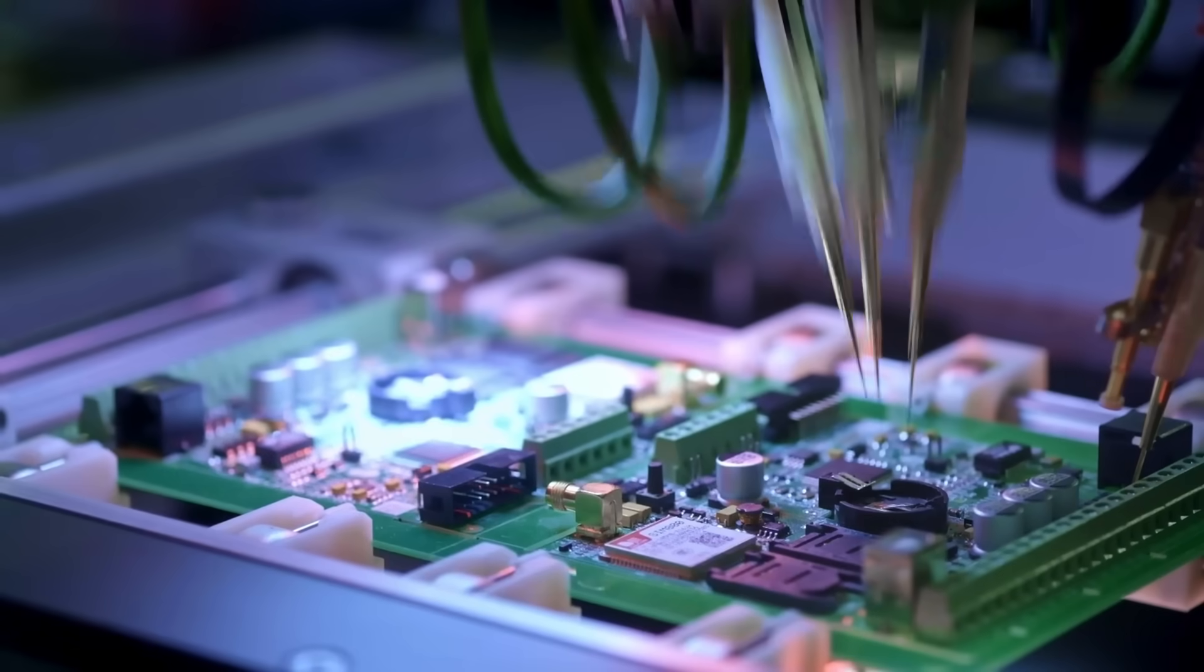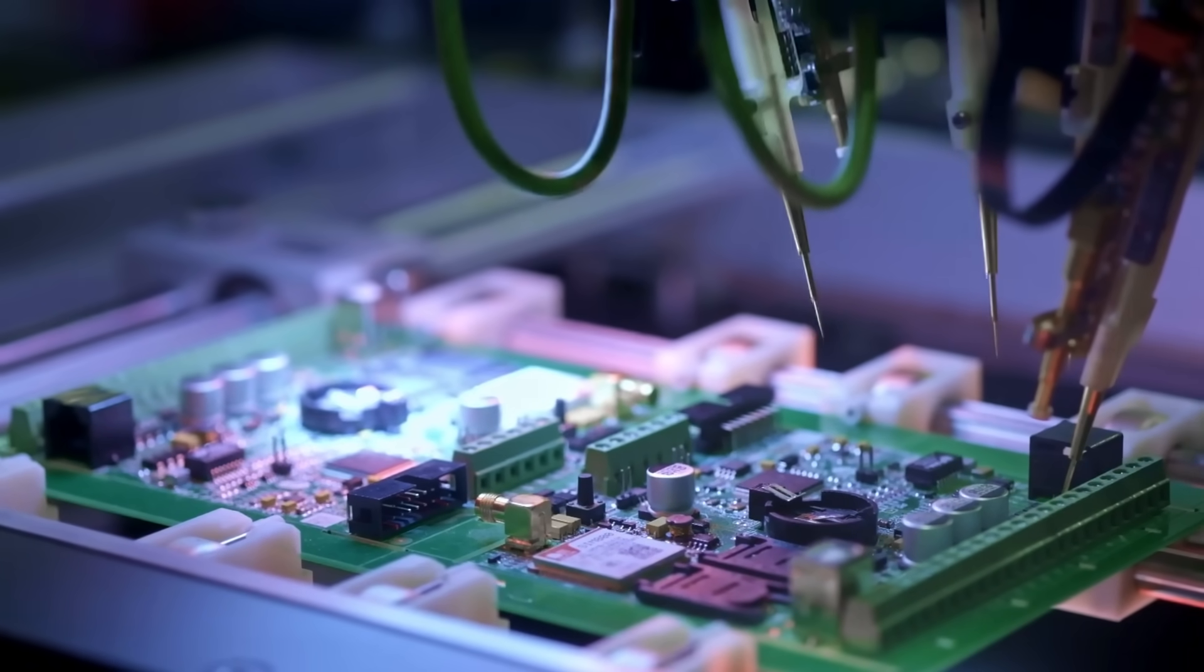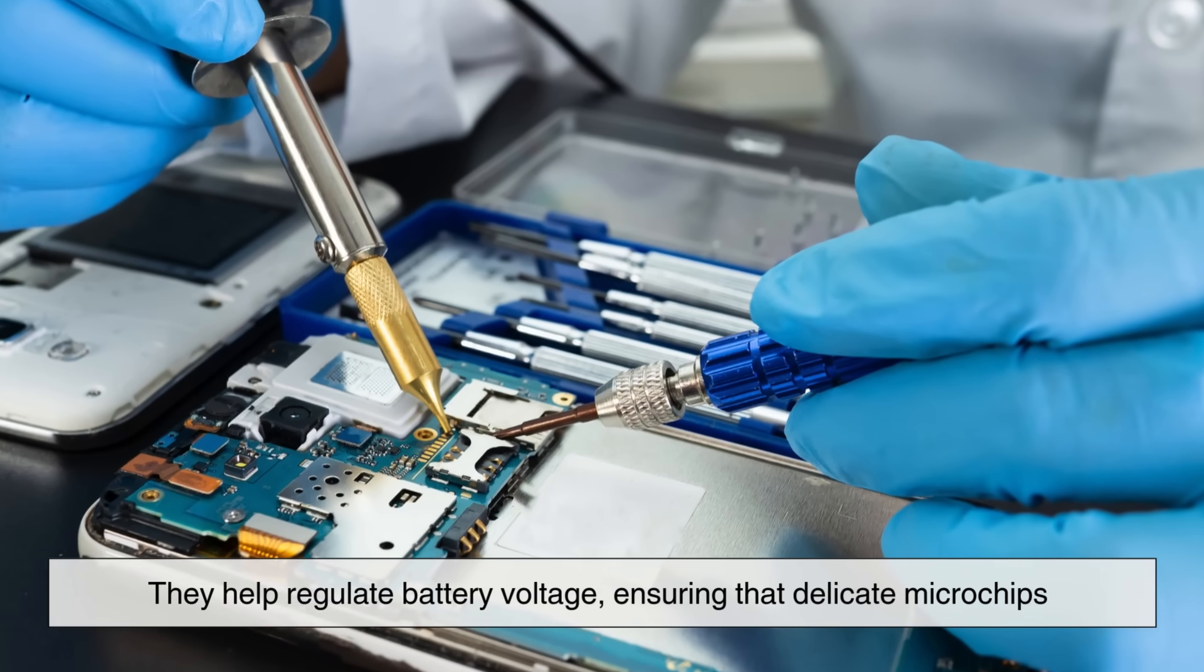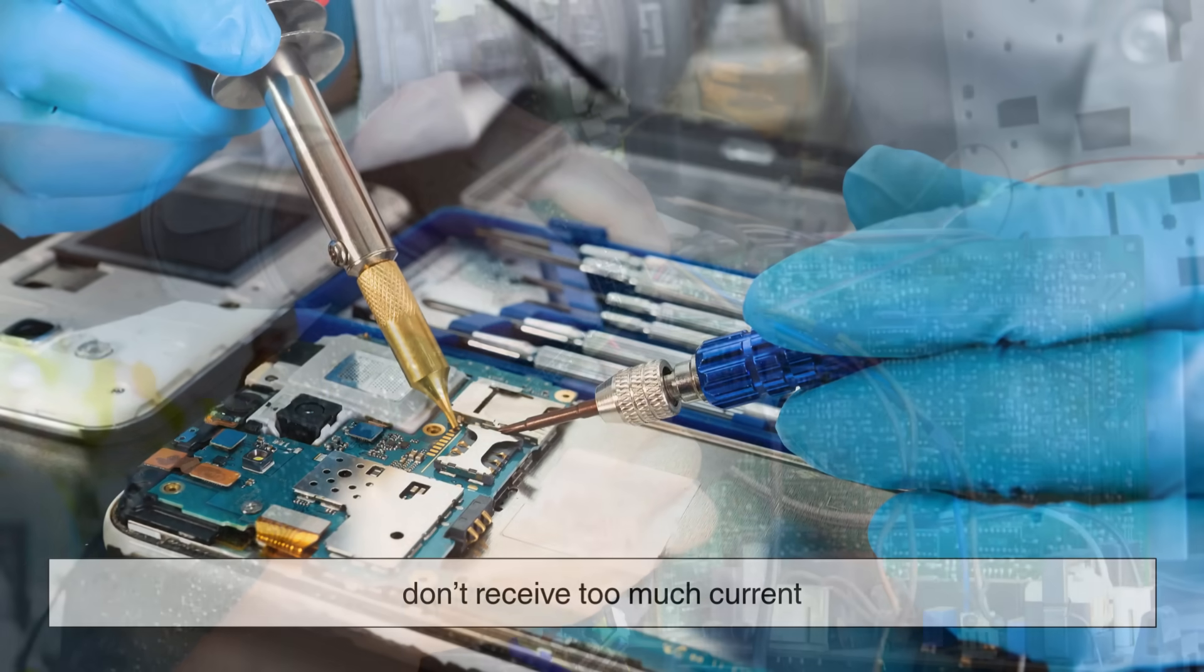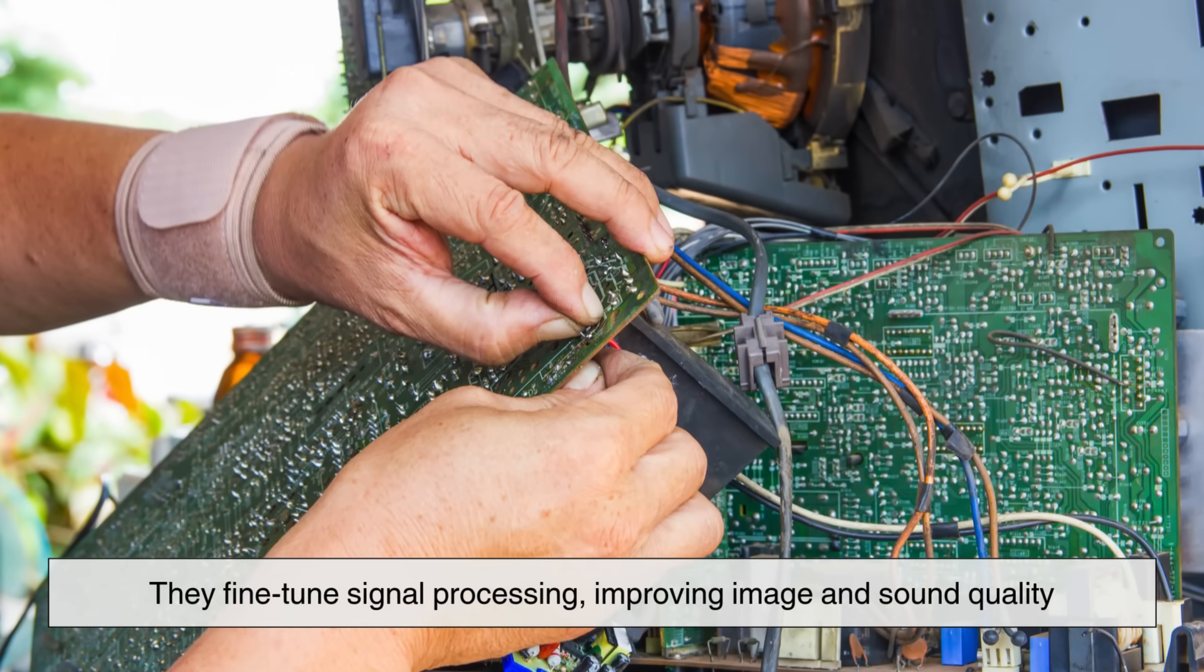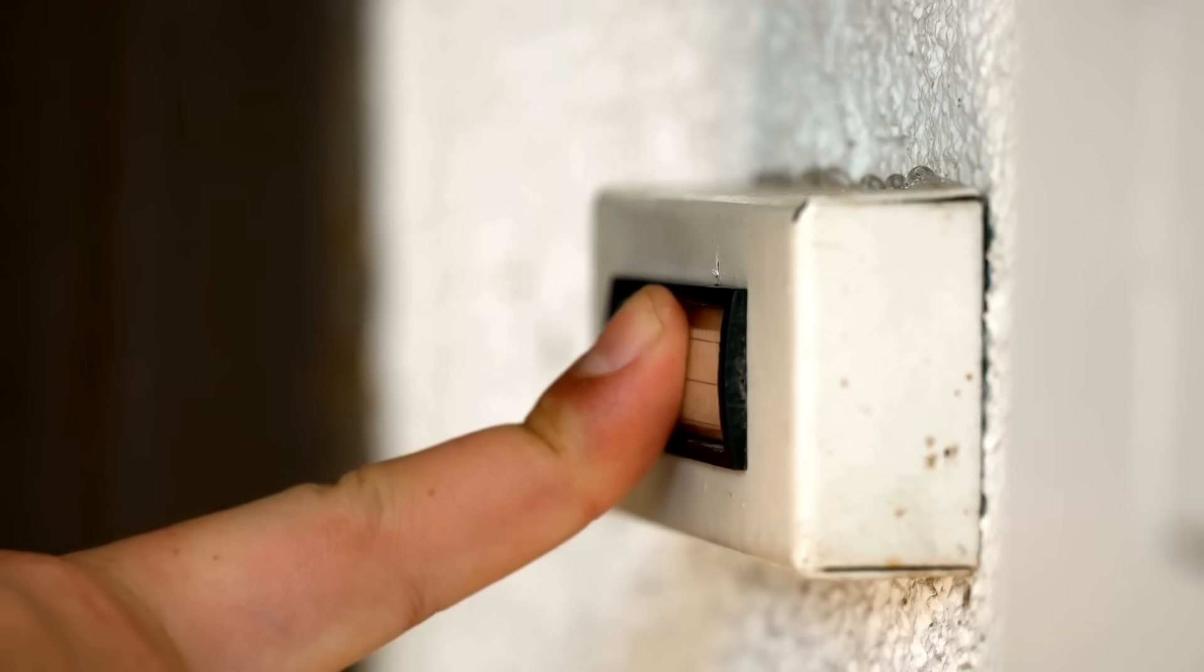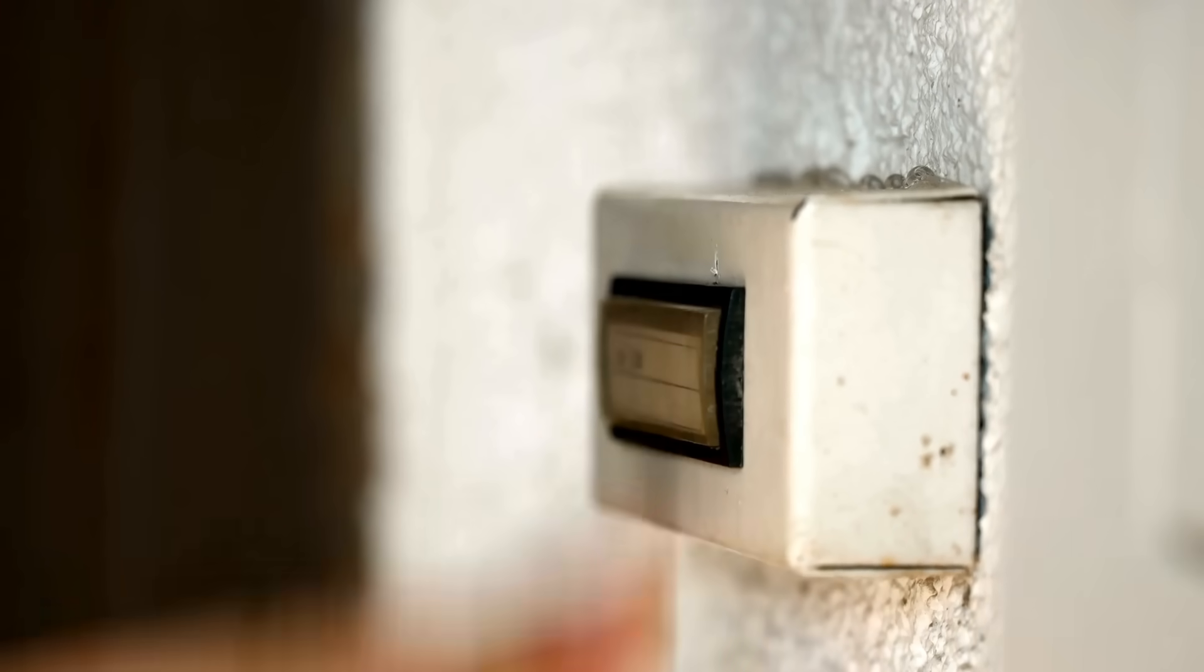In modern electronics, resistors are found in almost every device you can think of. Inside a smartphone, they help regulate battery voltage, ensuring that delicate microchips don't receive too much current. In televisions, they fine-tune signal processing, improving image and sound quality. Even in something as simple as a doorbell circuit, resistors ensure that the correct amount of power reaches the speaker.